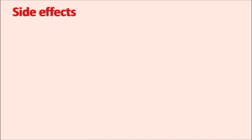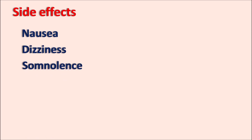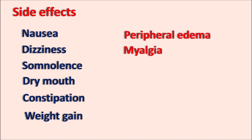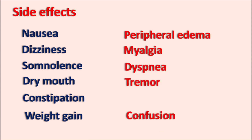What are the side effects? General side effects include nausea, dizziness, somnolence, dry mouth, and constipation. It also produces weight gain due to increased appetite. Other side effects include peripheral edema, myalgia (muscle pains), dyspnea (difficulty in breathing), tremor, confusion, and increased urinary frequency. Additionally, it can produce agranulocytosis, increase the QT interval, and precipitate serotonin syndrome if prescribed alongside other drugs that increase 5-HT levels.